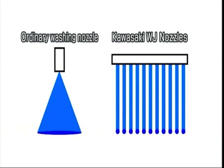Ordinary washing nozzles are less effective because the flow spreads outwards, greatly reducing energy density at the target surface.